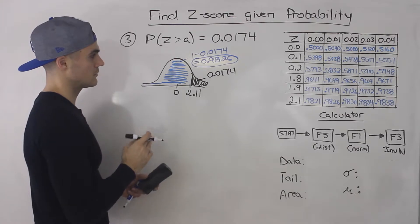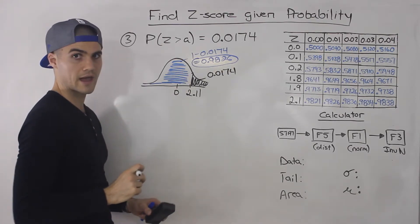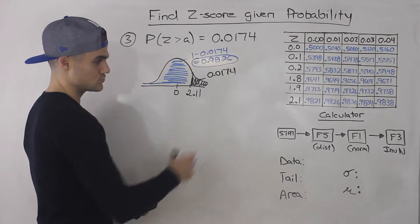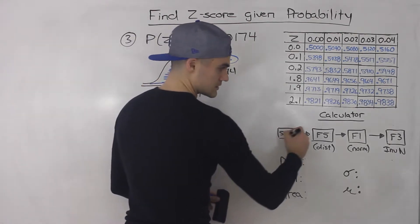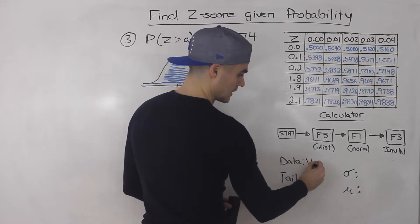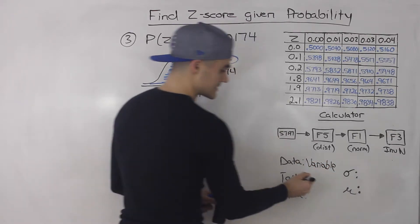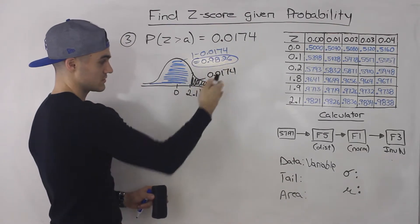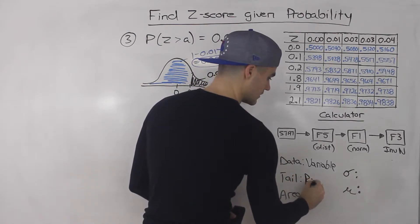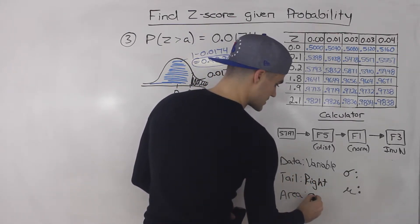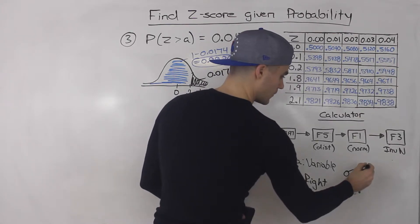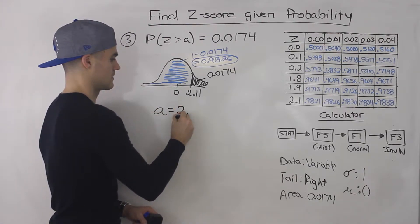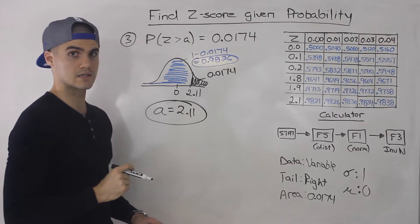So not too much rearranging — we just have to find the corresponding left-tailed probability given the right-tailed probability in order to use the table. Now for the calculator, it's a lot easier. Same inputs, and then we get to the screen with the variable option. What's going to be different is the tail — it's not going to be left anymore. We're given a right-tailed probability, so this 0.0174 is the right-tailed probability, so the tail should be set to right. Standard deviation 1, mean 0. When you execute that, you should get 2.11. That's the z-score answer.